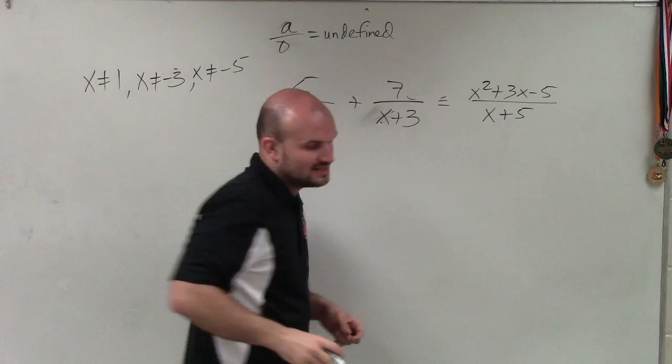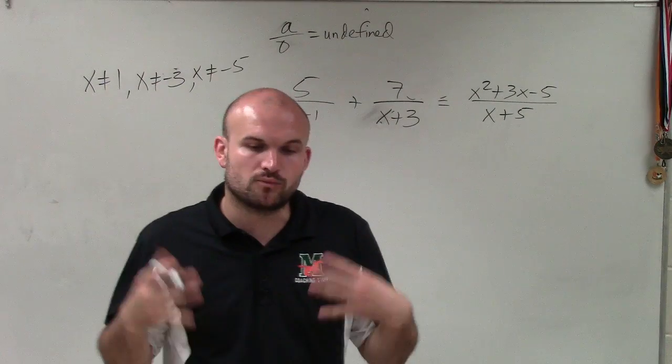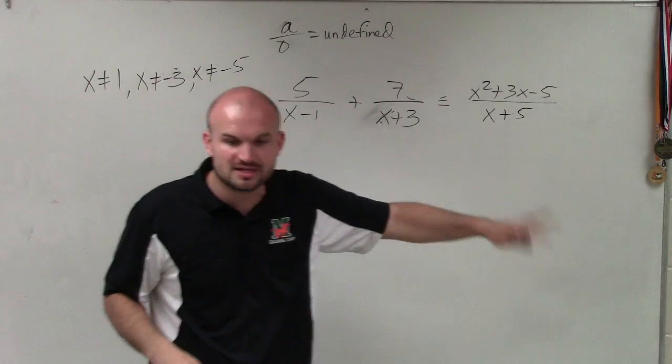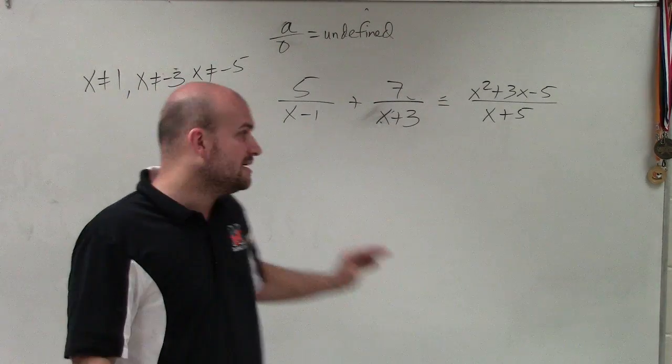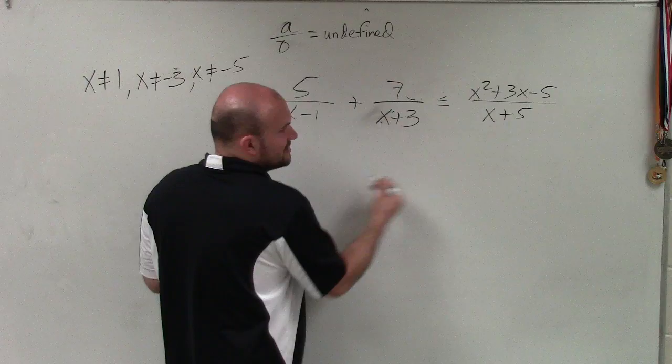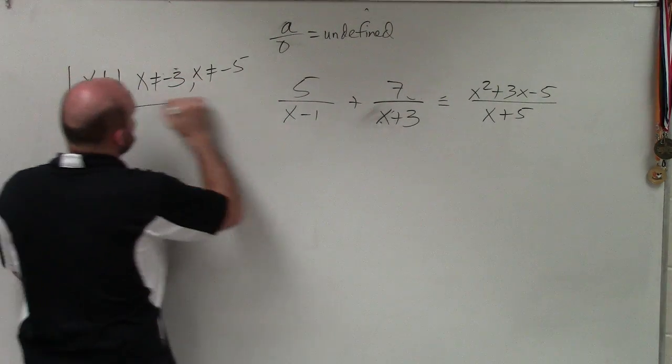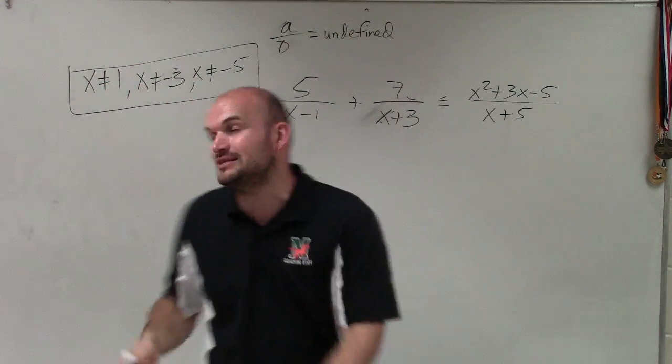But why is this all important? Well, this is important because when we go ahead and find our solutions, we're going to apply the operations to solve this rational equation. And once I get my values, I'm going to get some certain answers. What I want to do is go back to my original constraints and say, alright, are any of my solutions these values?